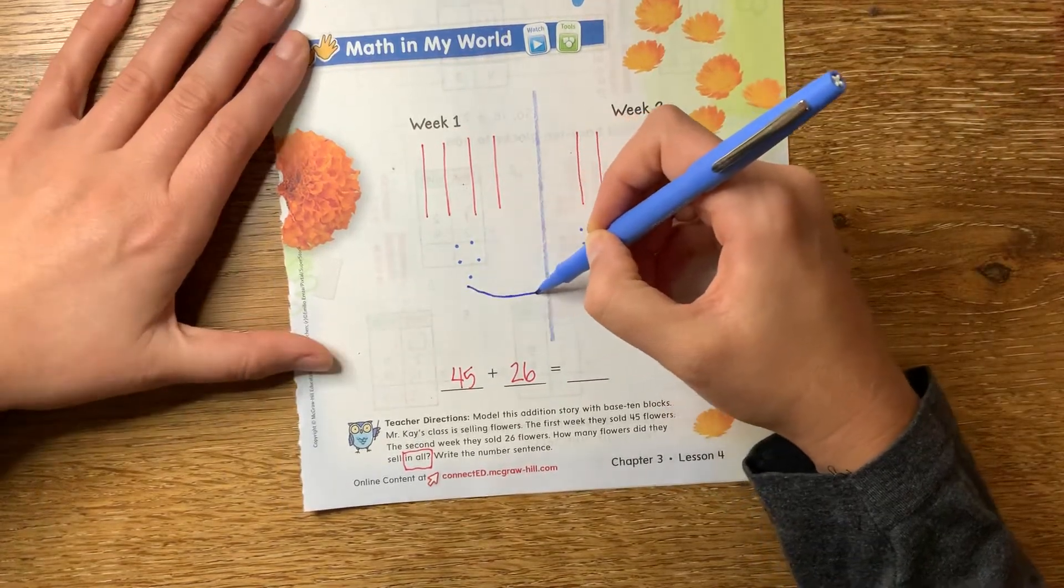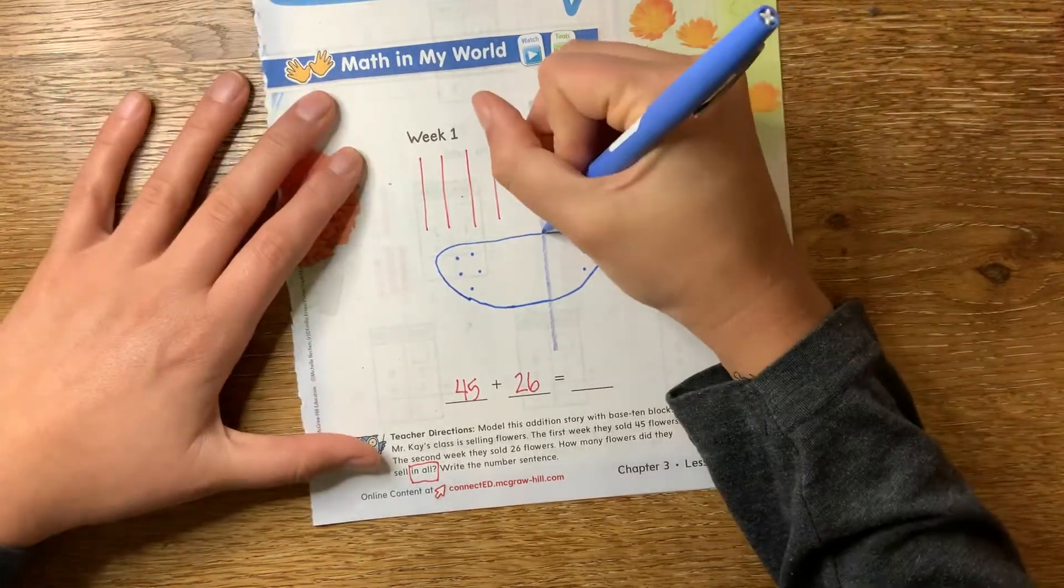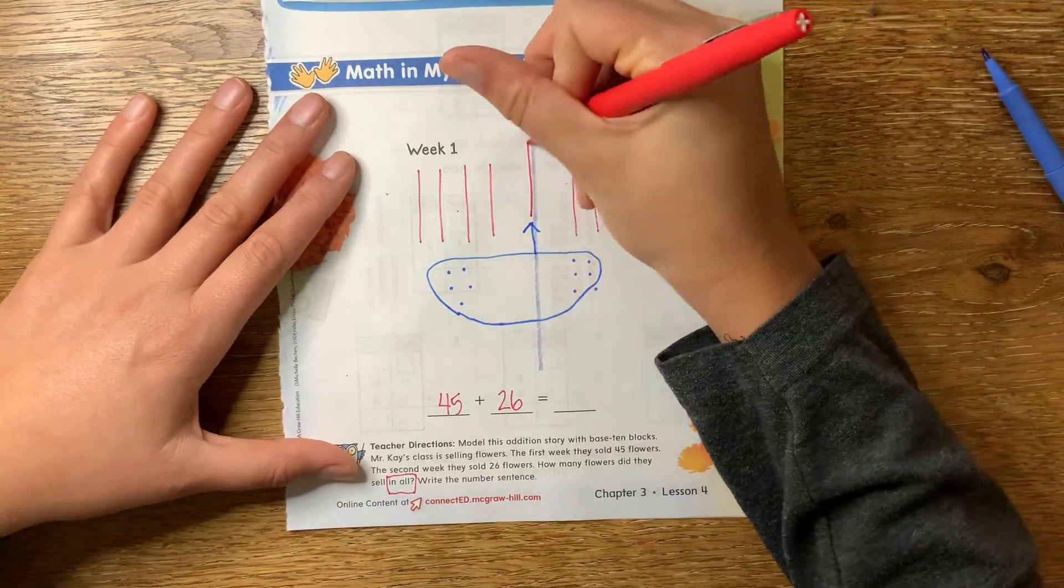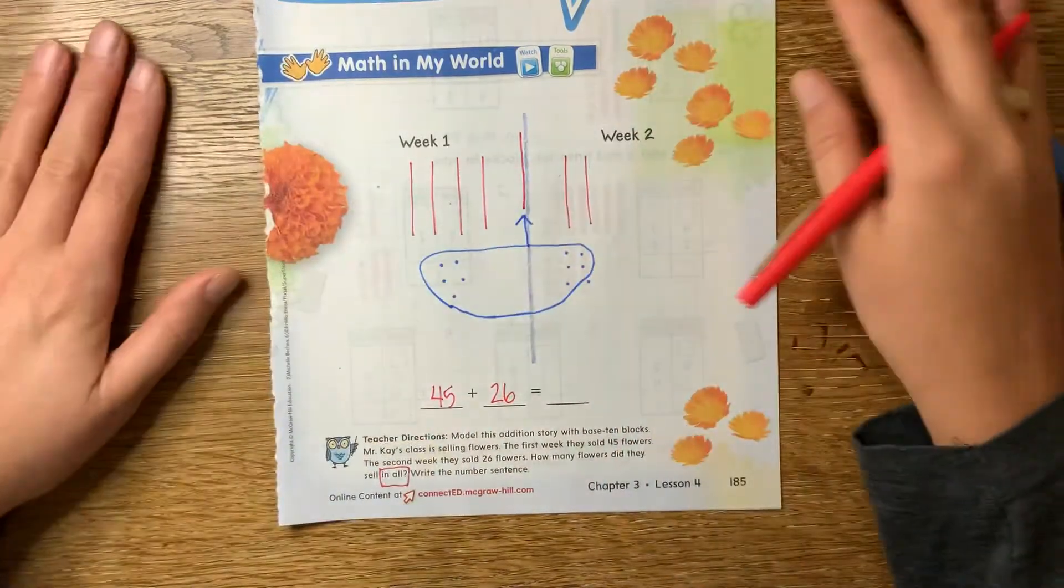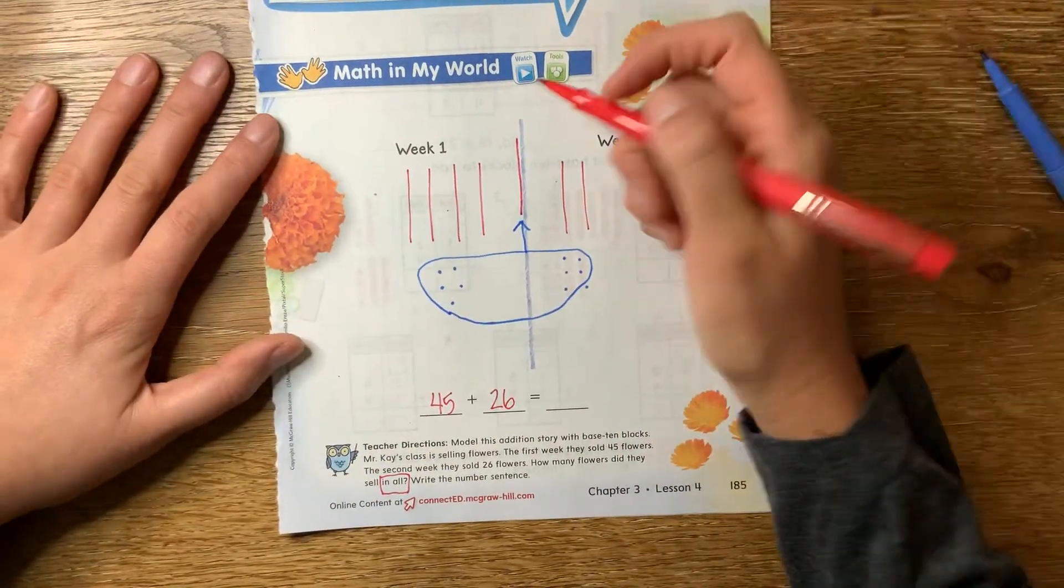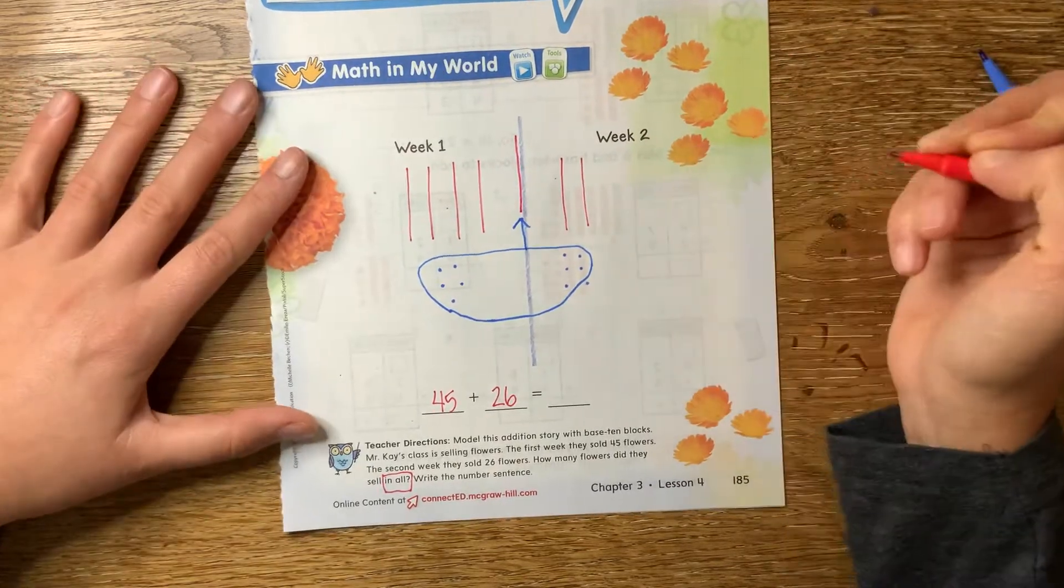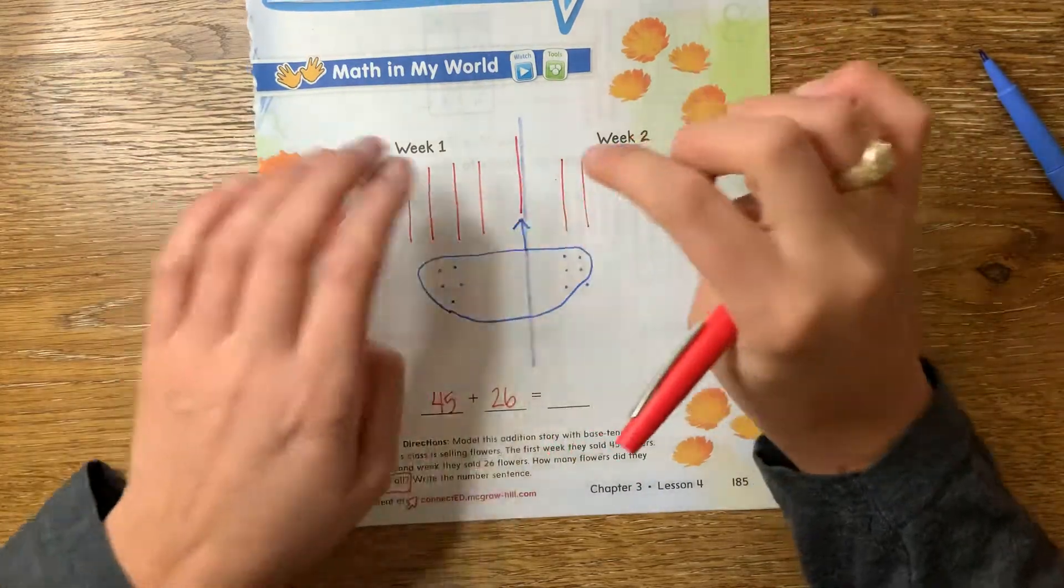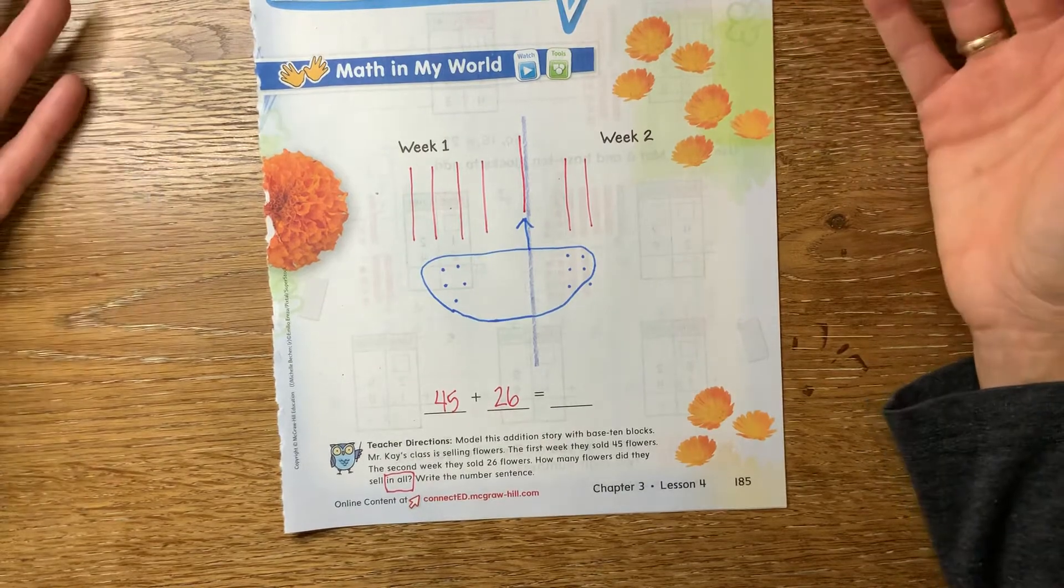I'm just going to circle all five of these and then five of the six over here, and those guys are going to turn into another 10, right? So I'm turning 10 ones into one 10. I'm not changing the value. It's still the same value, but now I turned those 10 ones into a 10, okay? So now how many ones do I have left? I have one one, and then I have four tens, one ten, and two tens. How many tens is that all together? Seven, right?